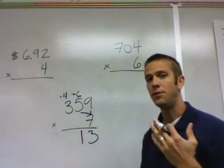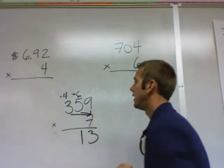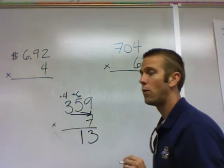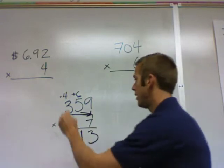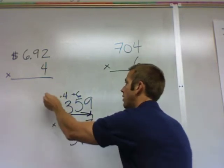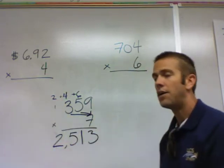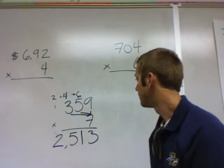Sometimes you put a little plus if it helps you remember. Three times seven, now you go to the hundreds, is 21, plus four is 25. Place the five here. And then the two would go up to the next column, but there's nothing there so it just falls down. So 2513.